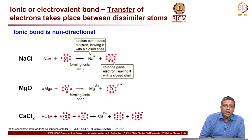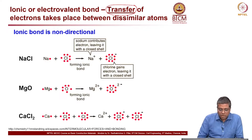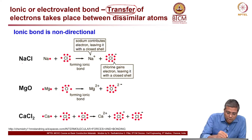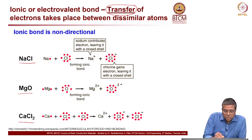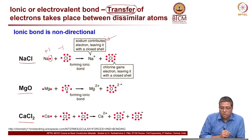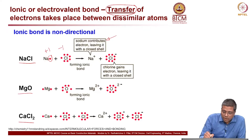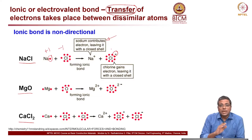Now, ionic or electrovalent bonds — what is happening is transfer of electrons takes place between dissimilar atoms. Examples include sodium chloride, magnesium oxide, or calcium chloride. In sodium chloride, sodium has a +1 charge and chloride has -1. Sodium contributes the electron leaving with a closed shell, and that electron is taken by the chloride ion, giving a negative charge on the chloride. So it is not sharing of electrons but transfer from one to the other.